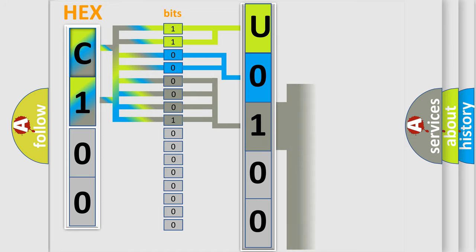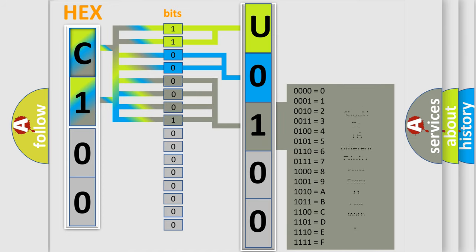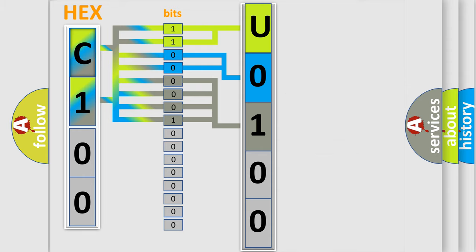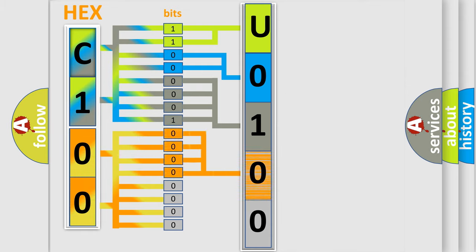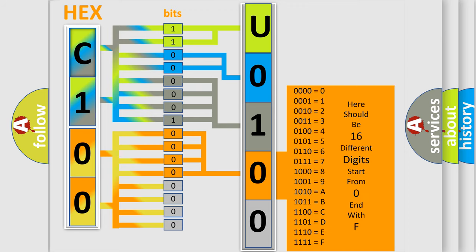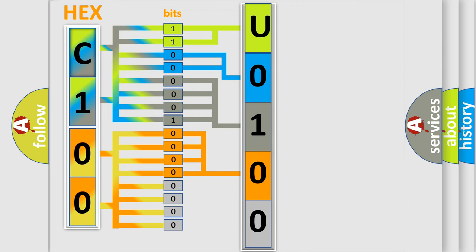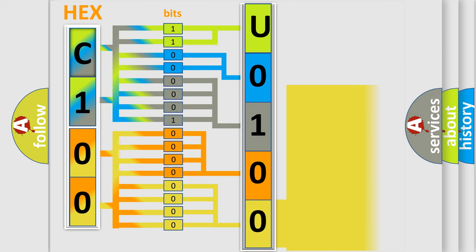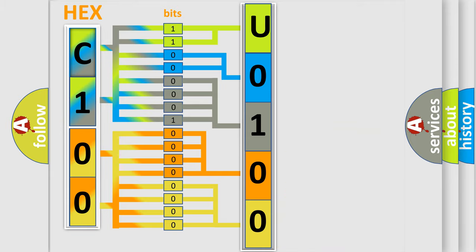The second byte is composed of a combination of eight bits. The first four bits determine the fourth character of the code, and the combination of the last four bits defines the fifth character. A single byte conceals 256 possible combinations. We now know in what way the diagnostic tool translates the received information into a more comprehensible format.